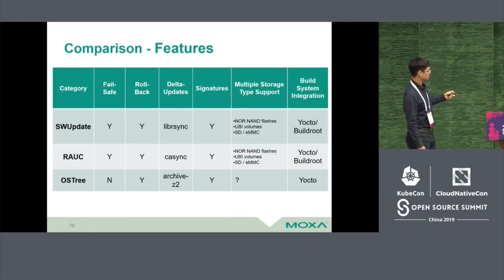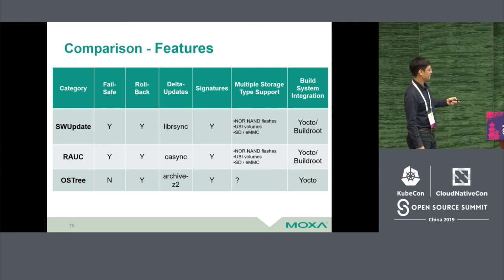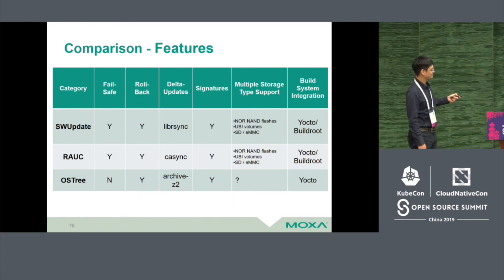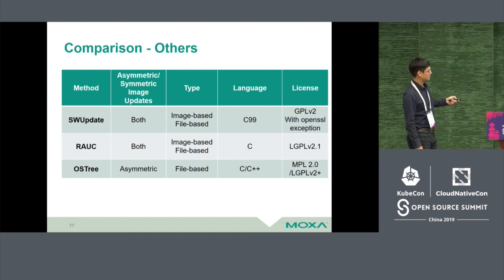I list some open source projects for software updates: SWUpdate and RAUC. SWUpdate supports failsafe and rollback features, data updates, signature for security, and multiple storage. In my experience I use SWUpdate — it's very easy to use and suitable for embedded devices. SWUpdate and RAUC both support symmetric and asymmetric updates, image-based and file-based. The licenses are GPL and LGPL.